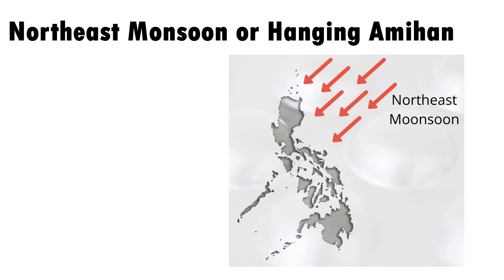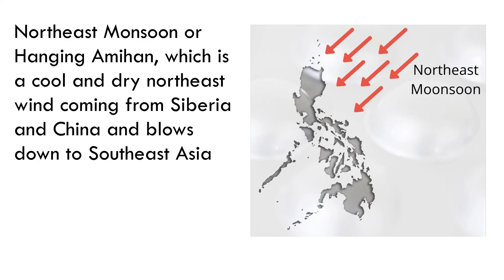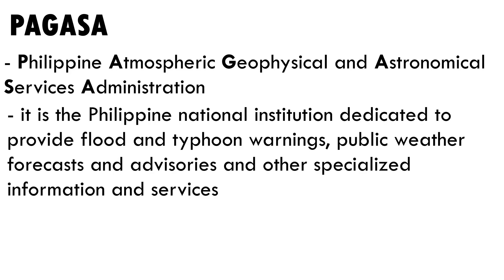The northeast monsoon or hanging amihan brings cool and dry wind from Siberia and China, blowing down to Southeast Asia. PAGASA, the Philippine Atmospheric, Geophysical and Astronomical Services Administration, is the Philippine national institution dedicated to providing flood and typhoon warnings, public weather forecasts and advisories, and other specialized information and services.